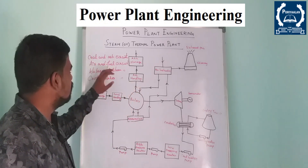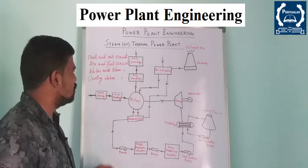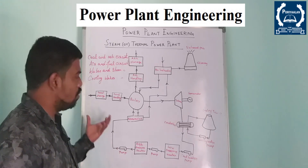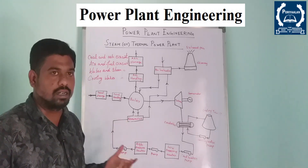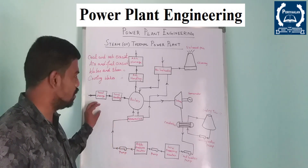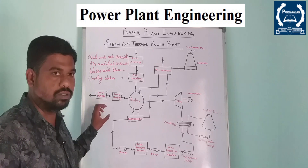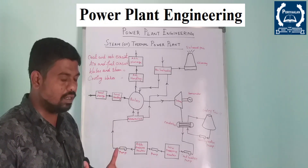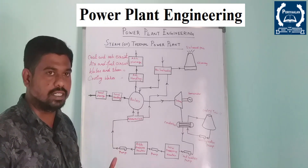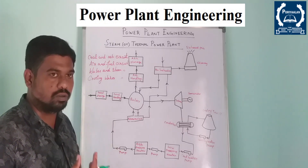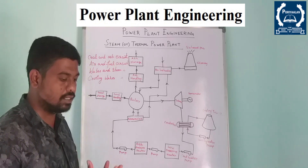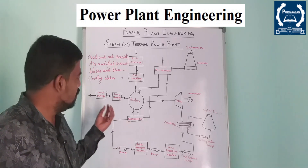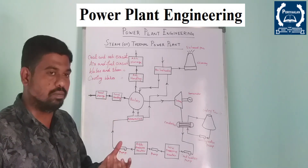First is the coal and ash circuit. Coal comes from the mine. We can store it in coal handling storage. We can size the coal and crush the coal into the minimum shape.